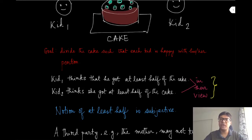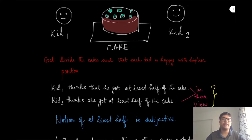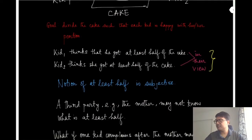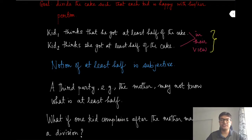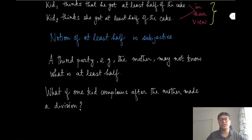If the mother knew every preference of these individuals, then she could have actually made the division herself and given the pieces to them. Now, this notion of 'at least half' is subjective and is also private information of each of these kids. Without this information, if the mother cuts this cake and gives the pieces to each child, there could be a possibility that one child will say that the piece of the other child is actually larger, and that will create a situation of envy. The question is: can you make this kind of division envy-free so that nobody envies each other's pieces?